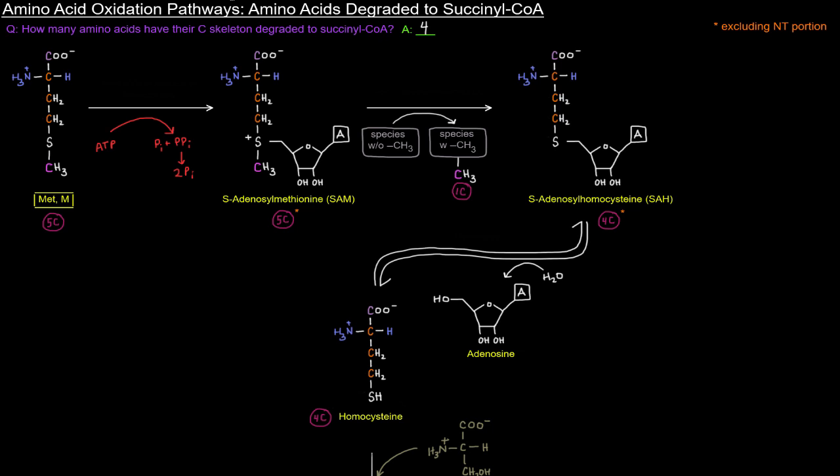All right, so first things first is we'll start with this methionine, five carbons. We're going to turn it into SAM, S-adenosylmethionine, using ATP and the methionine adenosyl transferase enzyme. And so we get SAM, which we've seen before as the primary methyl group donor. And notice that I have five carbons here with this little asterisk. That's excluding the portion from the nucleotide or the nucleoside, right? The adenosine portion.